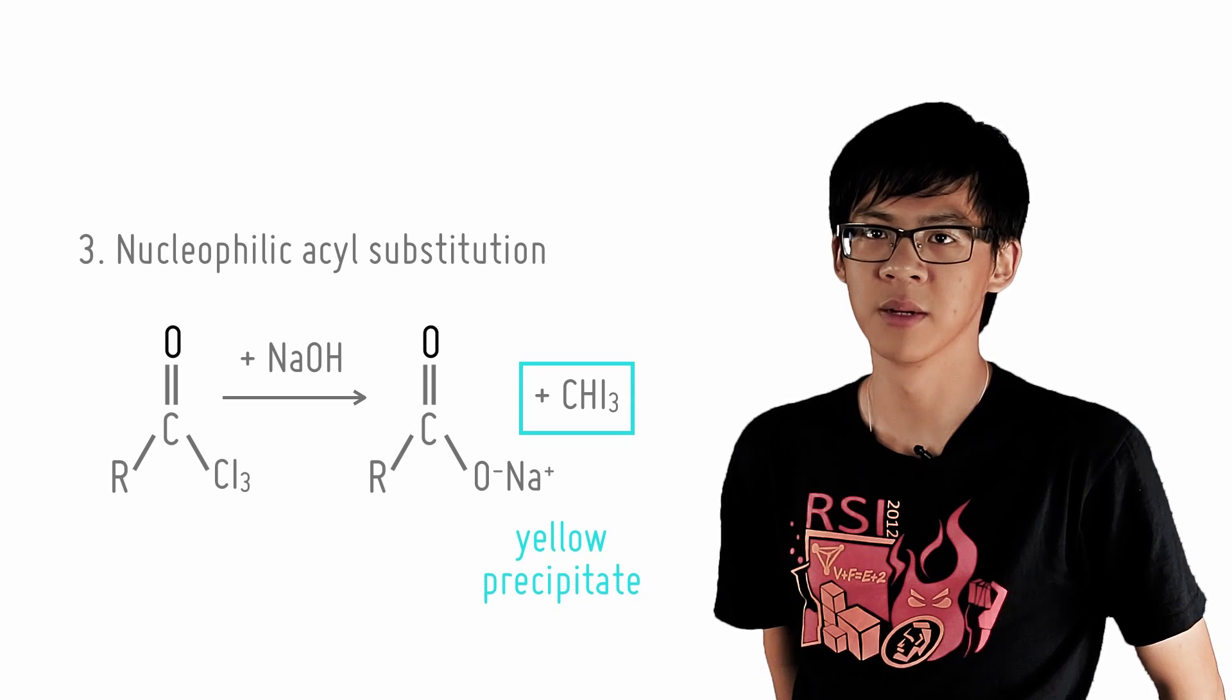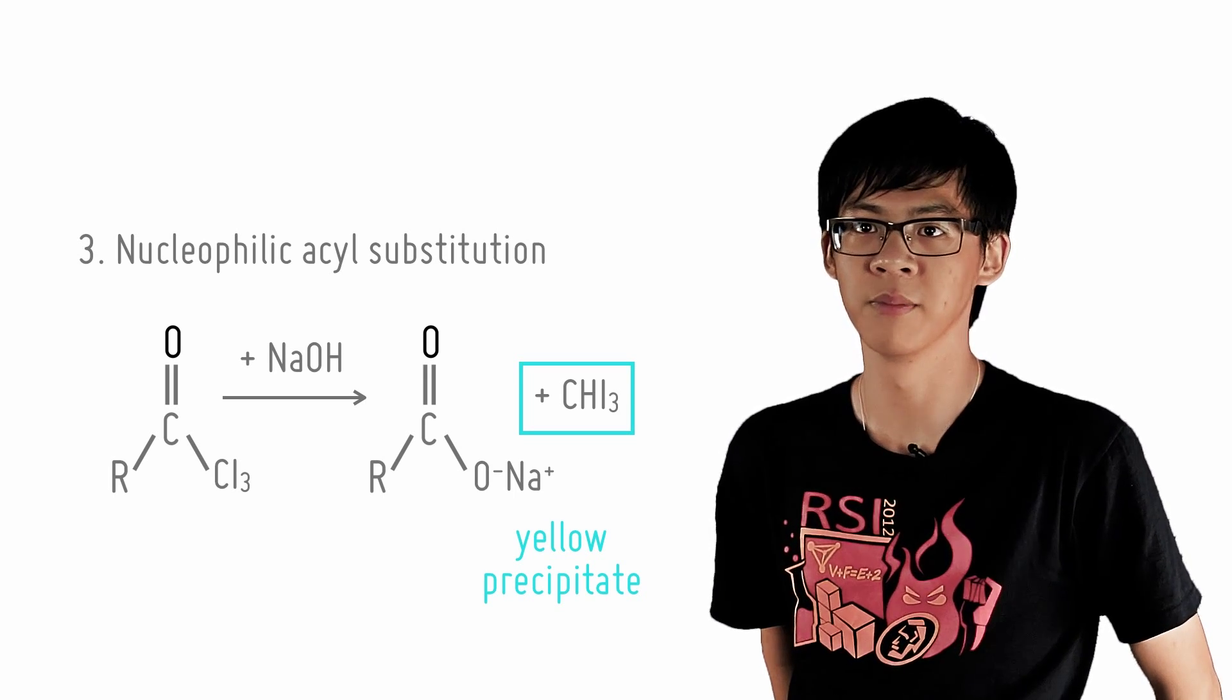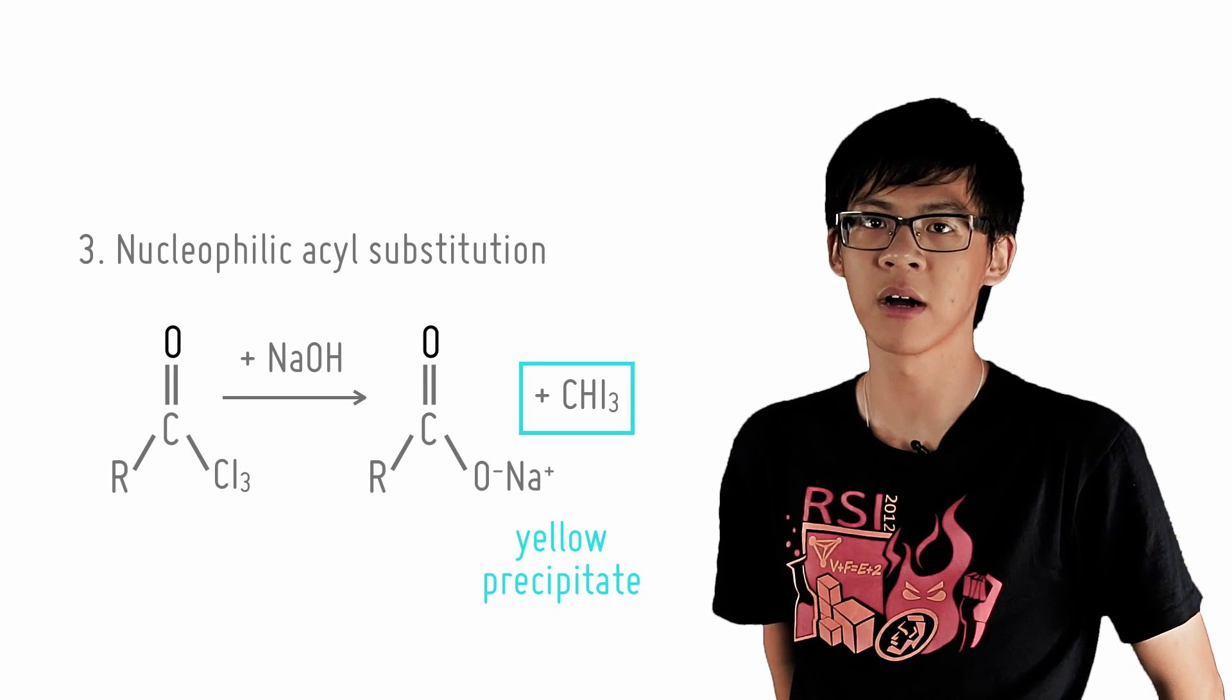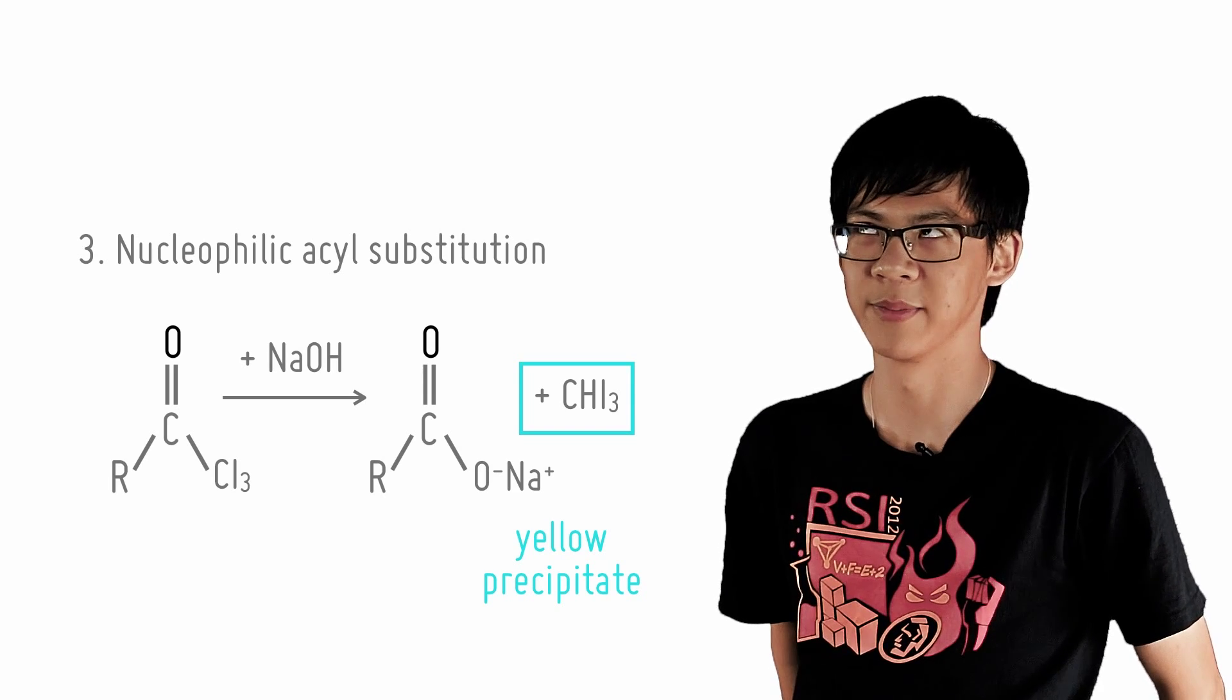Now again, you will encounter this reaction most commonly in organic elucidation questions and therefore it is important to remember that only methyl alcohols and methyl ketones will produce a positive test, i.e., you observe yellow precipitates.